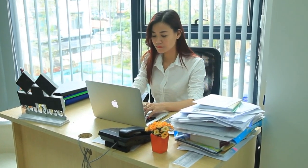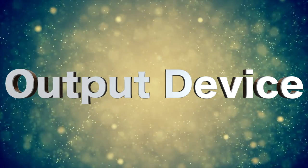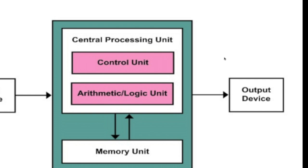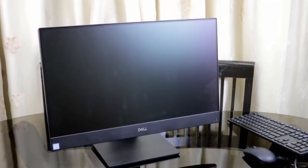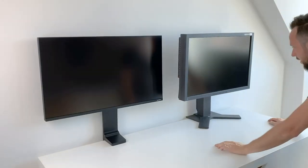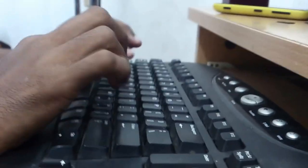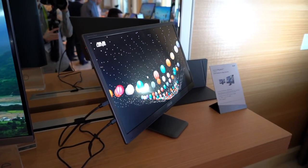After processing, the computer produces results through output devices. Monitor is an output device. Anything typed on the keyboard gets displayed on the monitor. The monitor is commonly called Visual Display Unit.